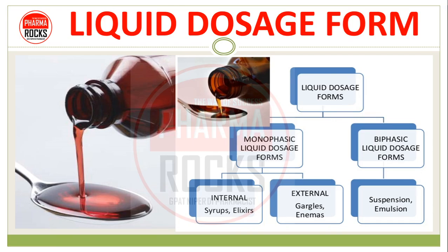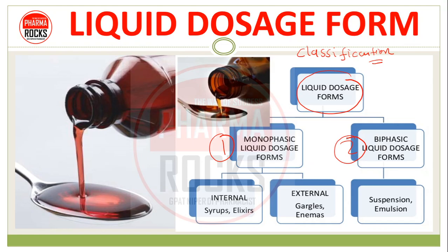जो हम discuss कर रहे हैं liquid dosage form, तो सबसे पहले आपको अच्छे से याद रखना है उसका classification — what is the detailed classification of this liquid dosage form? तो liquid dosage form में दो type पढ़ते हैं: एक है monophasic and second is the biphasic. Monophasic को आप internal और external preparations में further divide कर सकते हैं, and biphasic में आएगा suspension and emulsion.